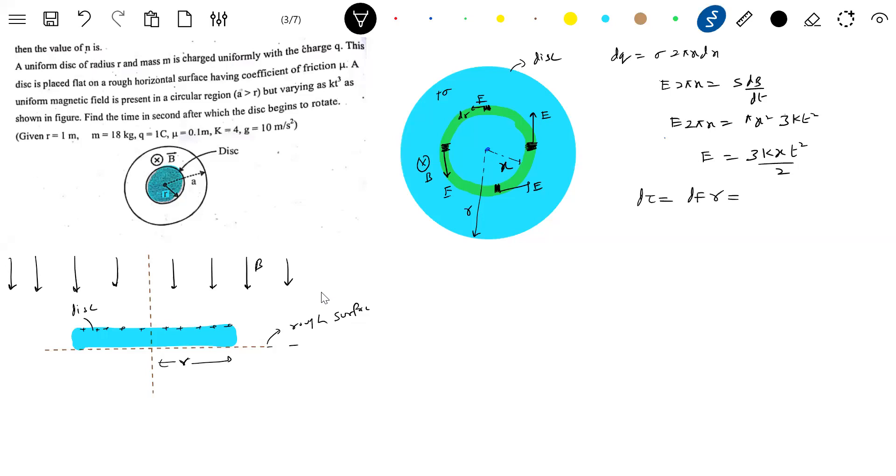Torque should be equal to dF into r. What is dF? dF should be equal to E into dQ into r. So what is E? 3K dF into X. So let's substitute 3KxT²/2. DQ will be sigma 2πx dx. What all we can get canceled here. So 3πK sigma T² X³ dx. It should be equal to zero to small R, 3πK sigma T² R⁴/4. This is torque due to induced electric field.